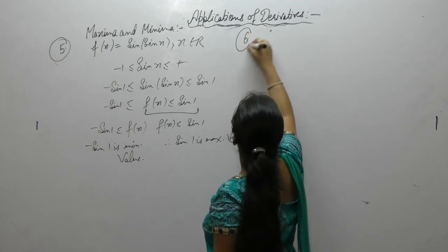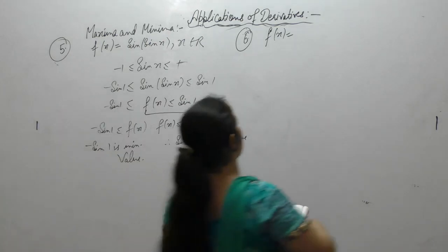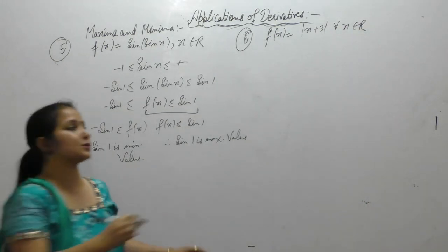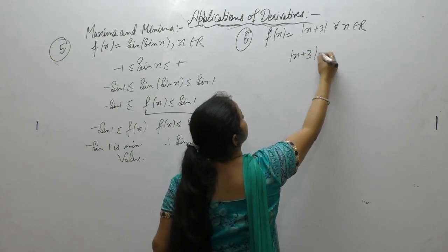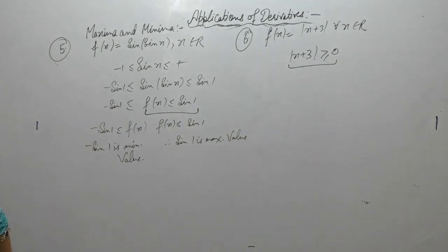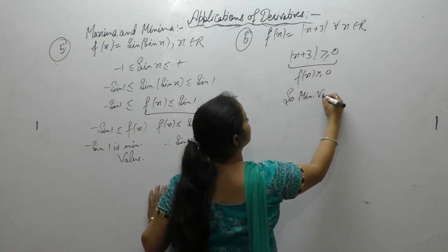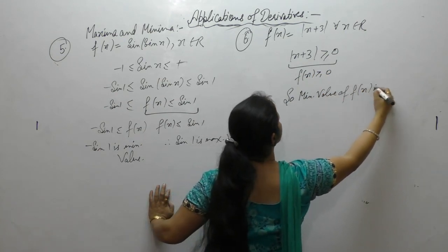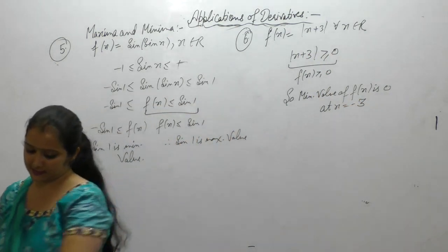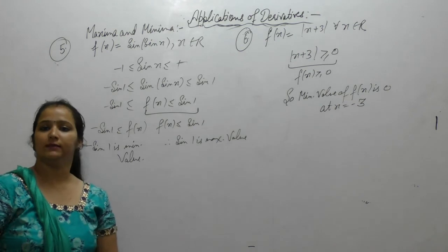Next is f(x) equal to modulus of (x plus 3), for all x belonging to real numbers. We know that modulus is always positive, so this value is greater than or equal to 0, meaning f(x) is greater than or equal to 0. The minimum value of the function is 0, which occurs when x equal to minus 3. The maximum value of the function does not exist.